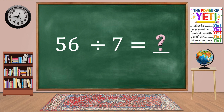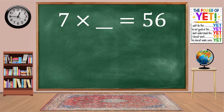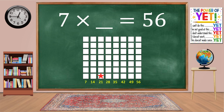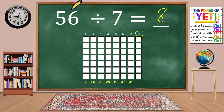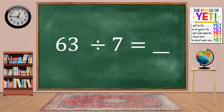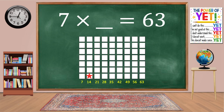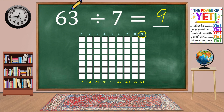56 divided by 7 equals blank. Our related fact is 7 times what equals 56? Skip count: 7, 14, 21, 28, 35, 42, 49, 56. We have eight columns. 7 times 8 equals 56. 56 divided by 7 equals 8. 63 divided by 7 equals blank. Skip count to 63 gives us nine columns. 7 times 9 equals 63. 63 divided by 7 equals 9.